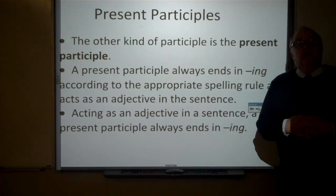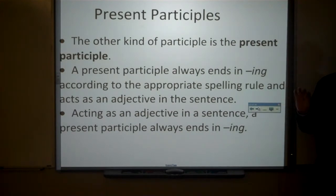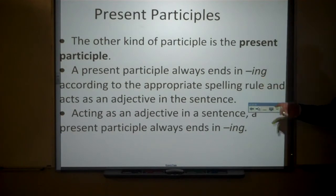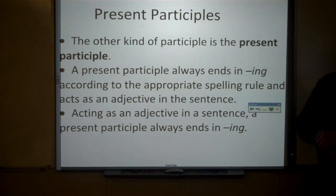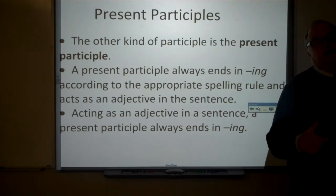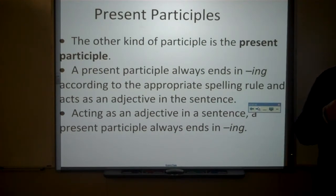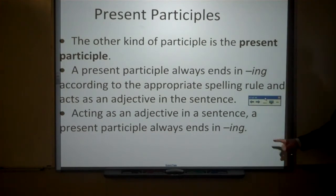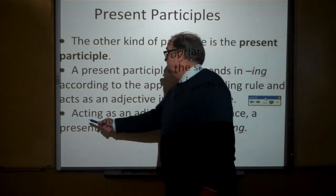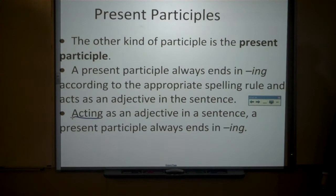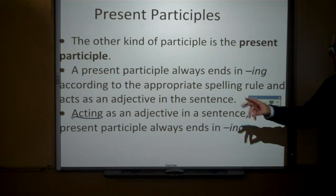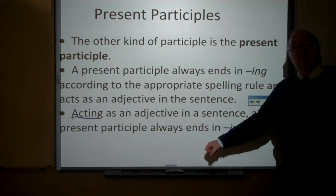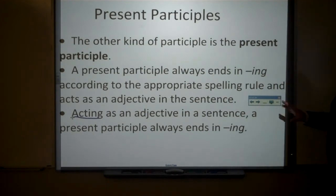The other kind of participle is the present participle. Present participles are very regular — they always end in ING, according to the appropriate spelling rule, and they act as adjectives in the sentence. Sometimes you double the final consonant or follow other spelling rules, but they always end in ING. For example, the word 'acting' is a present participle — it modifies the word 'participle,' and the main verb is 'ends.'